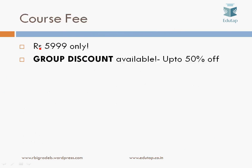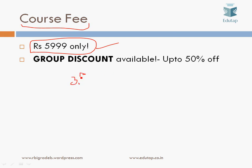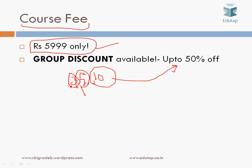Regarding the course fee, this bundle course is available at a price of rupees 5999 for an individual. However, if you approach us in a group, we offer handsome discounts: a group of ten or more gets 50% off, a group of five gets 35% off, and a group of three gets 20% off. You can buy the course individually or approach us as a group.